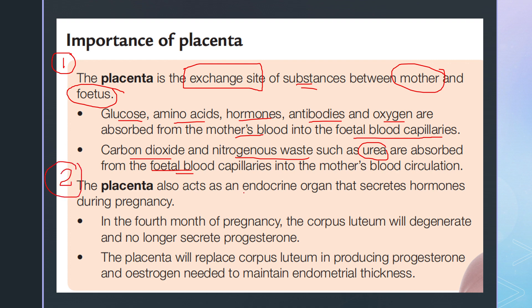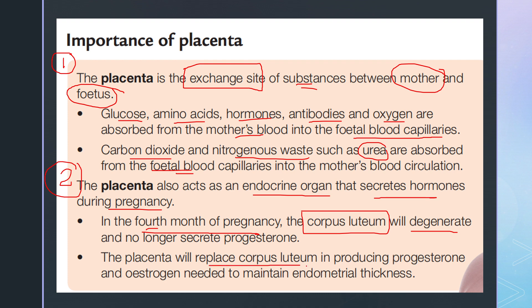The placenta also acts as an endocrine organ, meaning it is able to secrete hormones during pregnancy. In the fourth month of pregnancy, when the corpus luteum is no longer secreting estrogen and progesterone because it degenerates, the placenta plays an important role to secrete these hormones. It replaces the corpus luteum in producing progesterone and estrogen needed to maintain the endometrial thickness, as the uterus is the place for the fetus to develop.